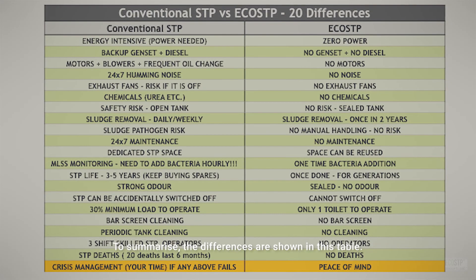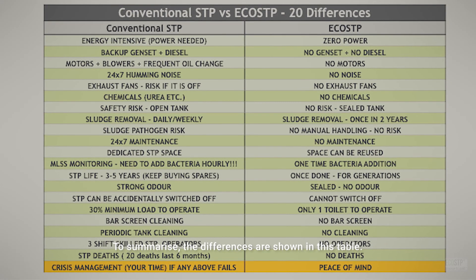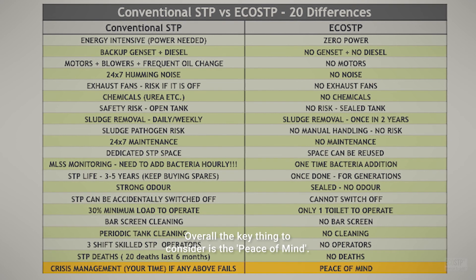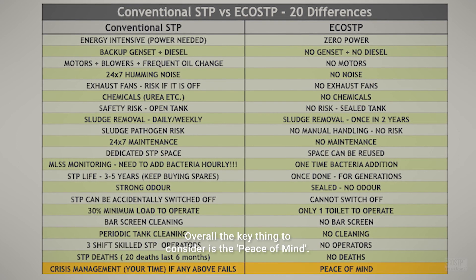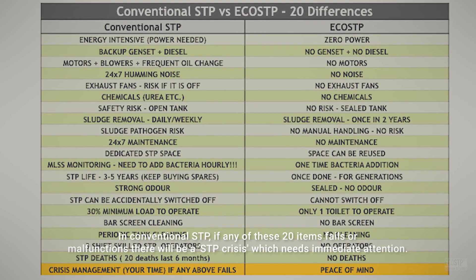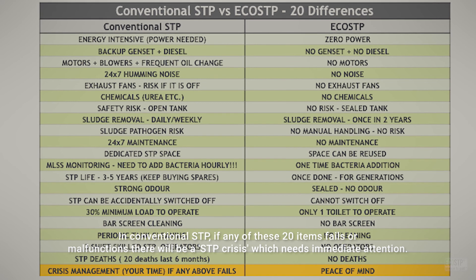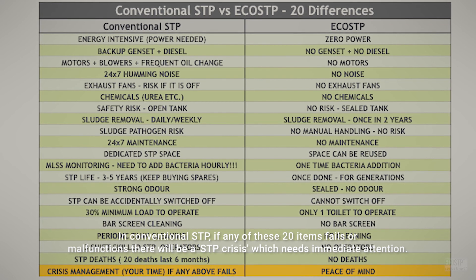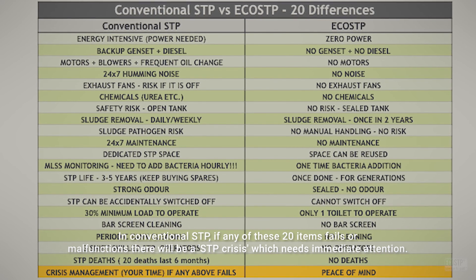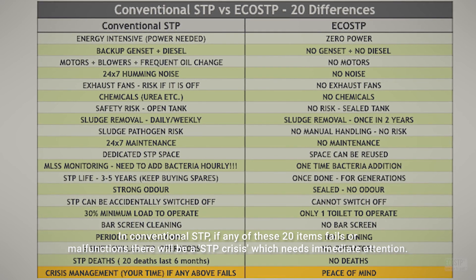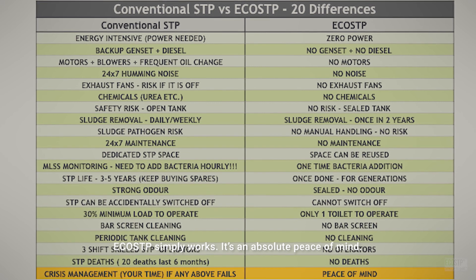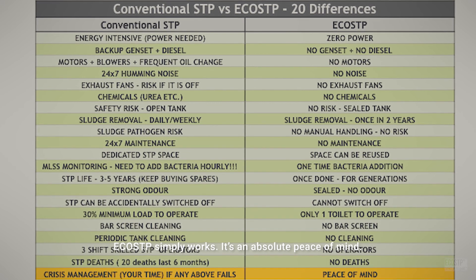To summarize, the differences are shown in this table. Overall, the key thing to consider is peace of mind. In conventional STP, if any of these items fails or malfunctions, there will be an STP crisis which needs immediate attention. EcoSTP simply works — it's absolute peace of mind.